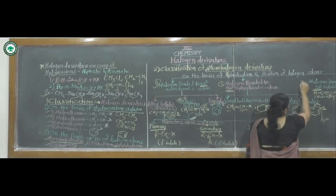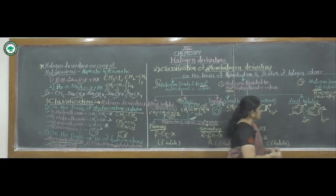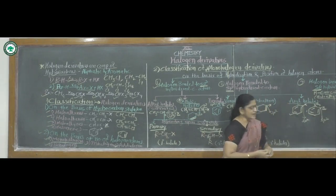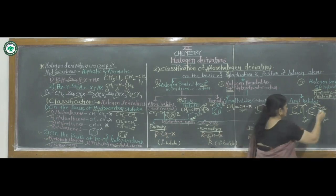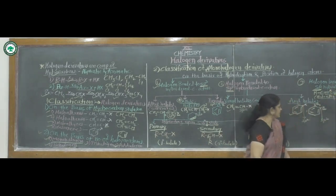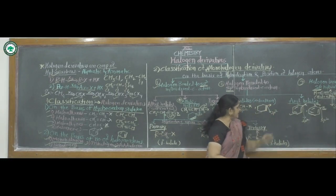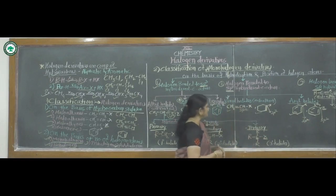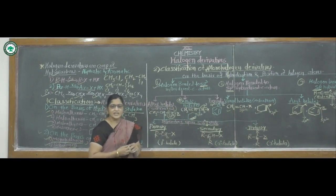The third type is halogen bonded to sp hybridized carbon atom. This is mainly a derivative of haloalkynes — it contains a carbon-carbon triple bond. The carbon atom to which the halogen atom is bonded is sp hybridized, meaning it is bonded to an adjacent carbon by a triple bond. In this way, there is classification based on hybridization and position of halogen atoms.